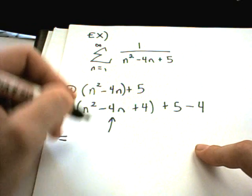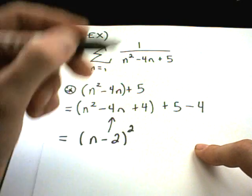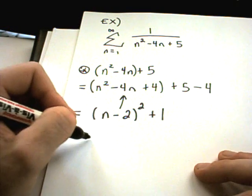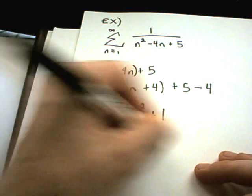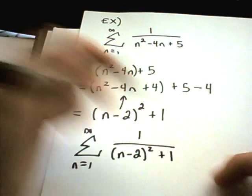I can now write the stuff in parentheses as n minus 2 quantity squared plus 1. So, really the problem I'm going to examine instead will be from 1 to infinity of 1 over n minus 2 squared plus 1.